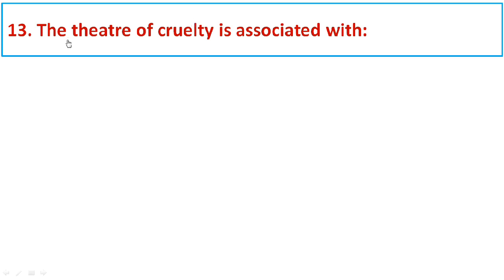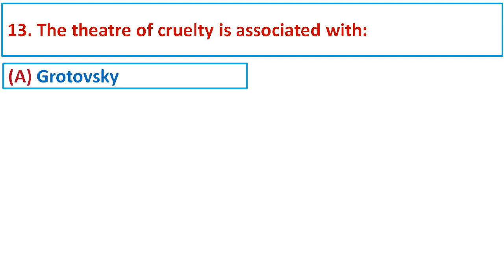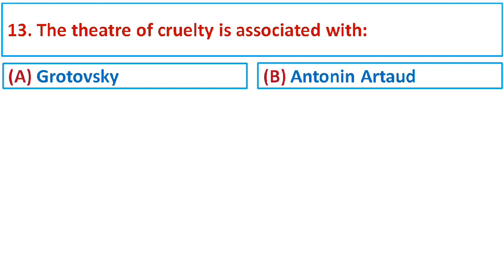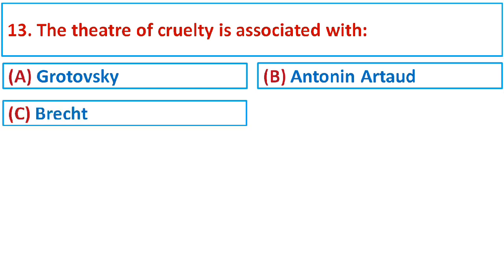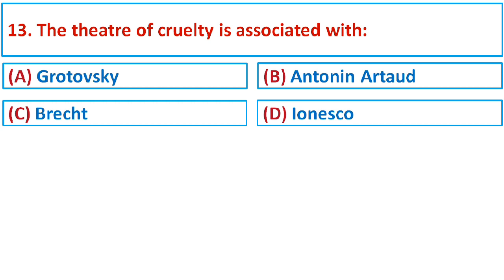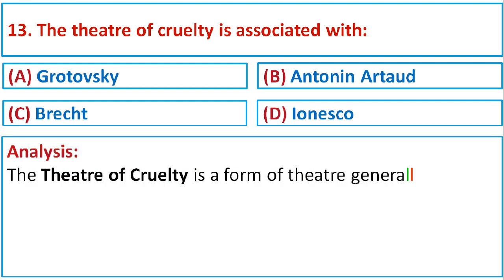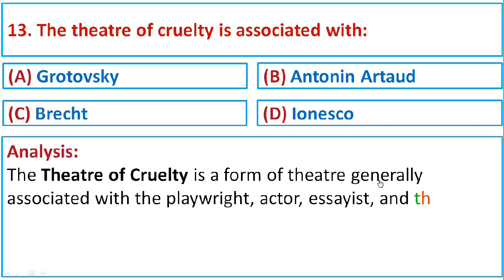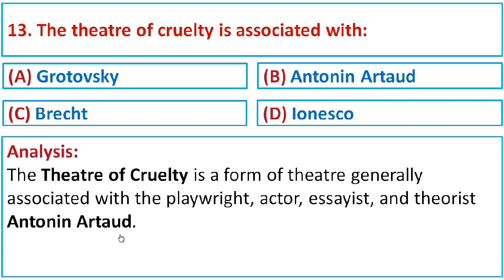Question number thirteen: The Theatre of Cruelty is associated with Option A: Grotowski, Option B: Antonin Artaud, Option C: Brecht, or Option D: Ionesco. The Theatre of Cruelty is a form of theatre generally associated with the playwright, actor, essayist, and theorist Antonin Artaud. The correct option is B: Antonin Artaud.